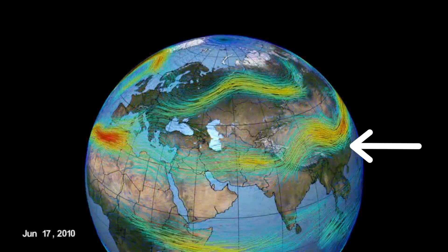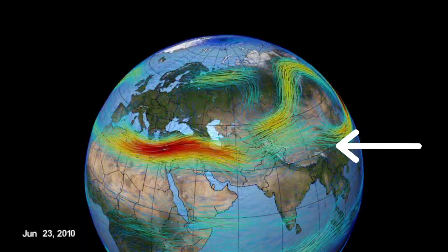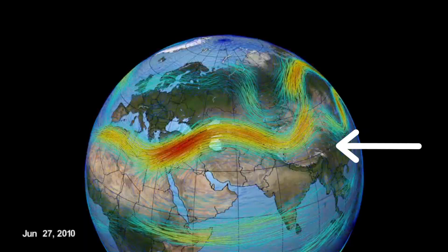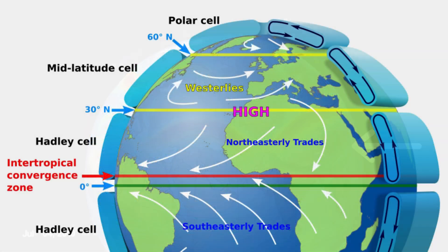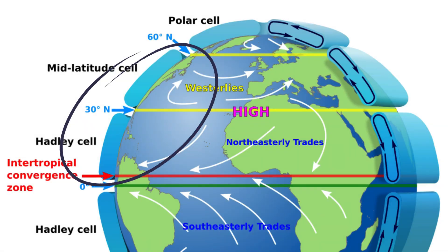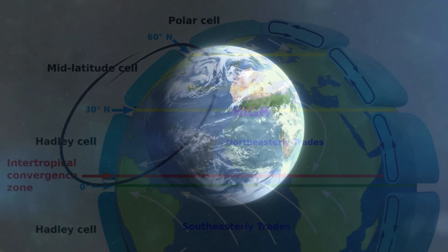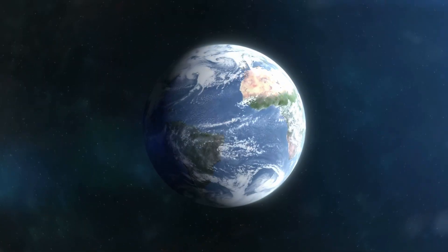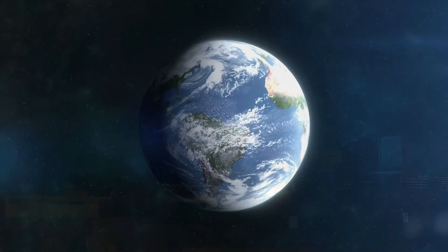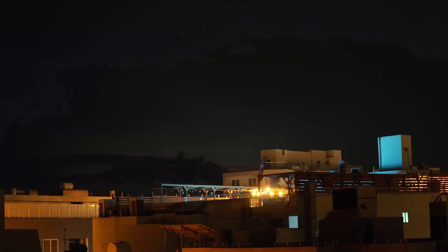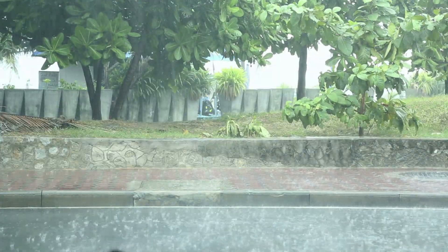The northern hemisphere also has a subtropical jet stream, which flows closer to 30 degrees north and sits higher in the atmosphere. This jet forms where tropical circulation meets the mid-latitude circulation. It plays a major role in weather patterns across the southern United States, North Africa, the Middle East, and South Asia. Many winter storms in the Mediterranean region, and the winter rain systems affecting northern India, are guided by this subtropical jet.